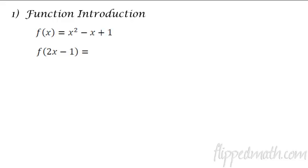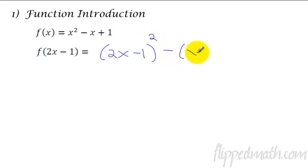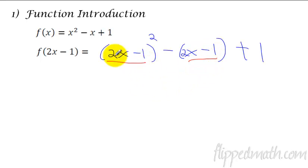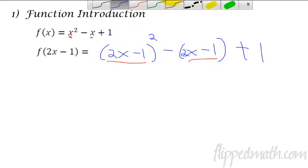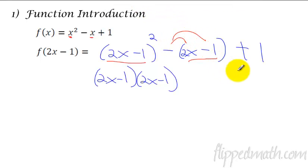So the first lesson — one of the things we talked about was stuff like this, where we had x squared minus x plus 1 as our function, and we're going to plug in 2x minus 1. So just remember that means 2x minus 1 is plugged in anywhere where you see the x. So we get (2x minus 1) squared minus (2x minus 1) plus 1. And then you'd have to multiply this whole thing out. This is 2x minus 1 quantity squared, which means there are two of them, and then you have to distribute that negative to both spots, and then simplify.